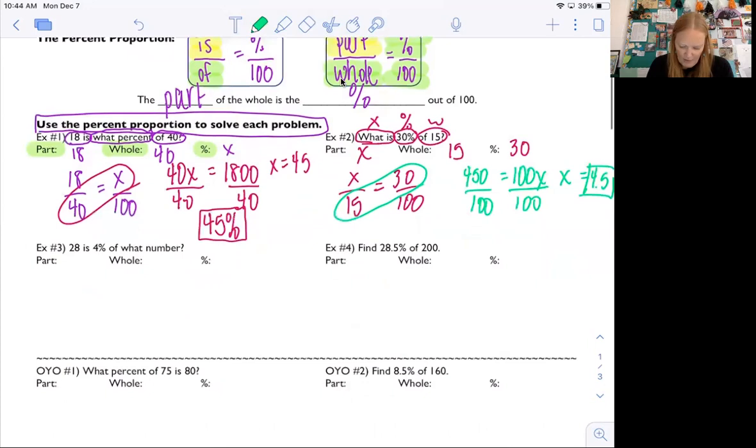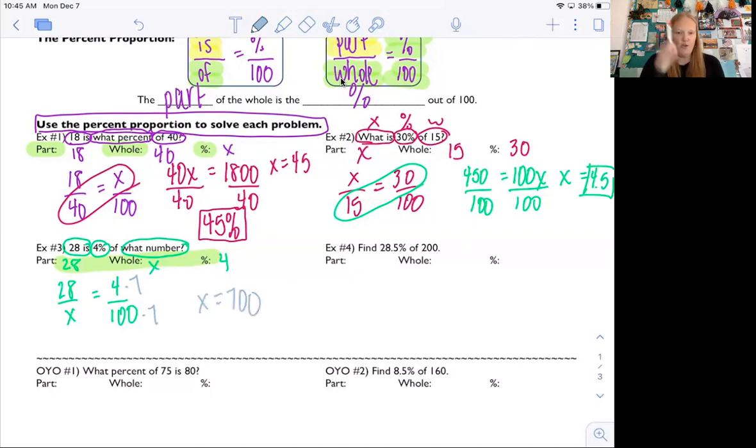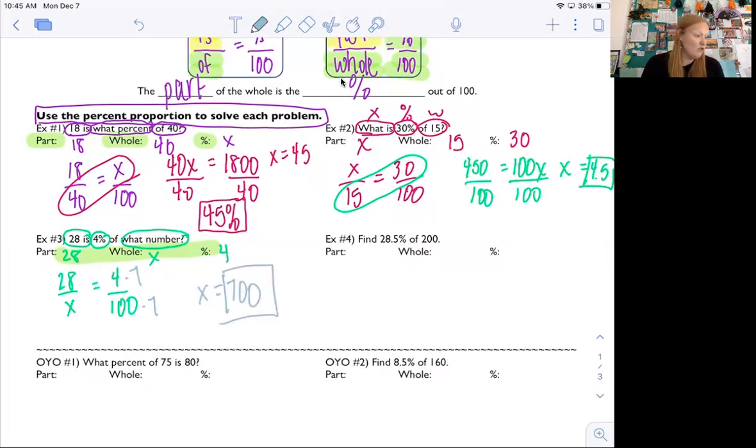Let's try another one. So 28 is, so there's my is, remember is is the part. So my 28 goes there. 4% is going to go here. And what number. The only thing I don't know is the whole. All of these proportions are going to have the hundred in it because they're dealing with percents. So one of the numbers down here that we're writing down should have an X in it. So I get 28 over X equals four over a hundred. 28 is 4% of what number? I can use giant one on this one. Check it out. Four times seven gives me 28. So that means a hundred times seven gives me my answer. So X is huge. X is 700. So let me reread the question. 28 is 4% of what number? My answer should be a number. So the answer is 700. Wow. That's crazy.